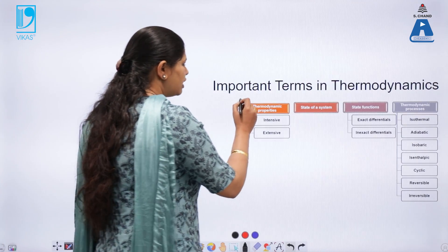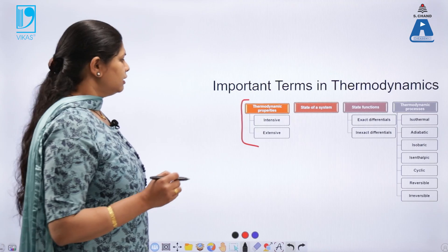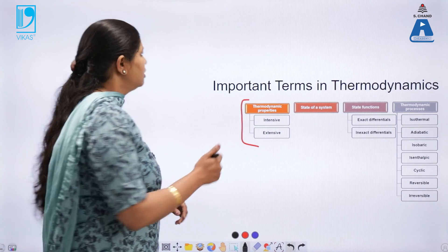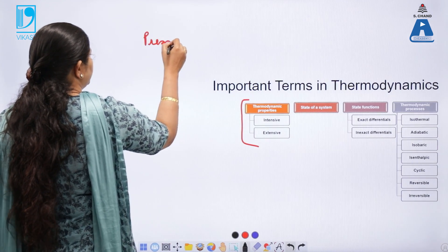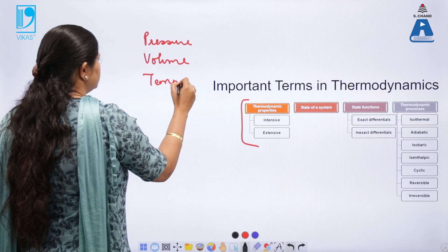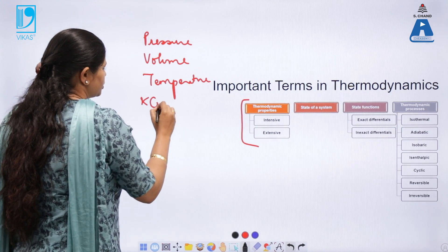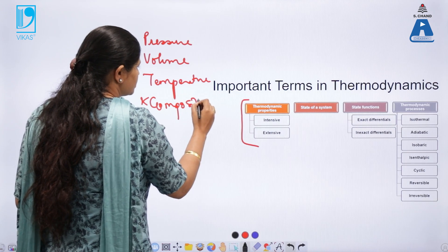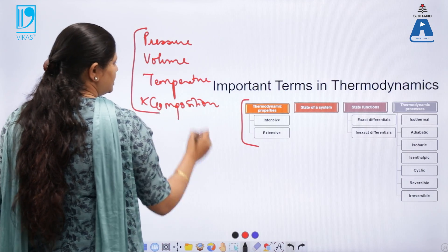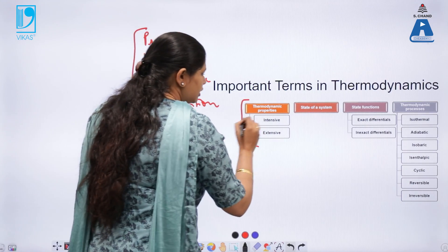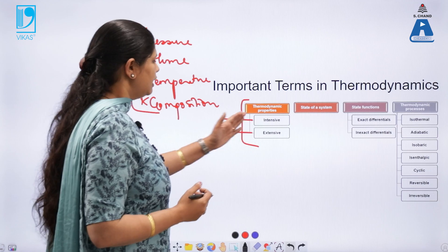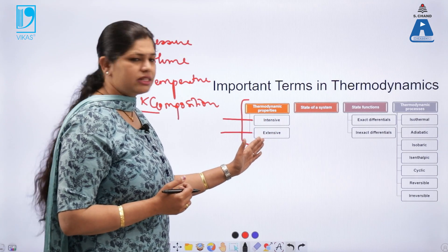Now, what are thermodynamic properties? Thermodynamic properties are derived from the four basic thermodynamic variables: pressure, volume, temperature, and composition of the system. The state of a system is defined by these four things. These properties can be categorized into intensive and extensive properties.